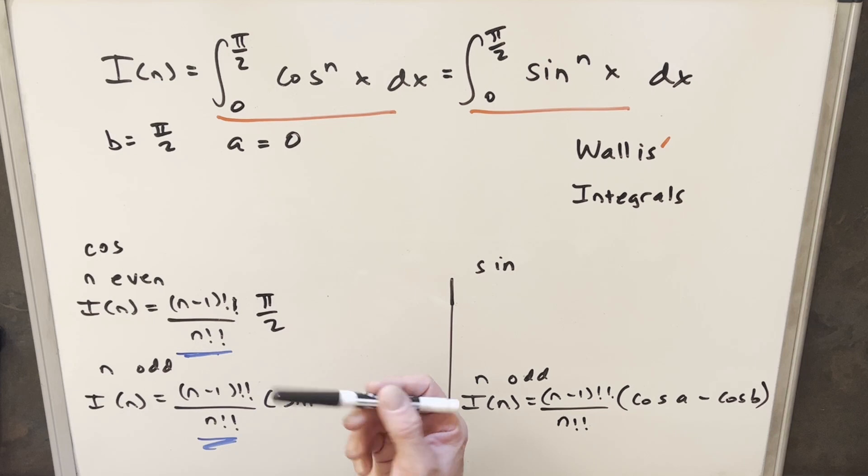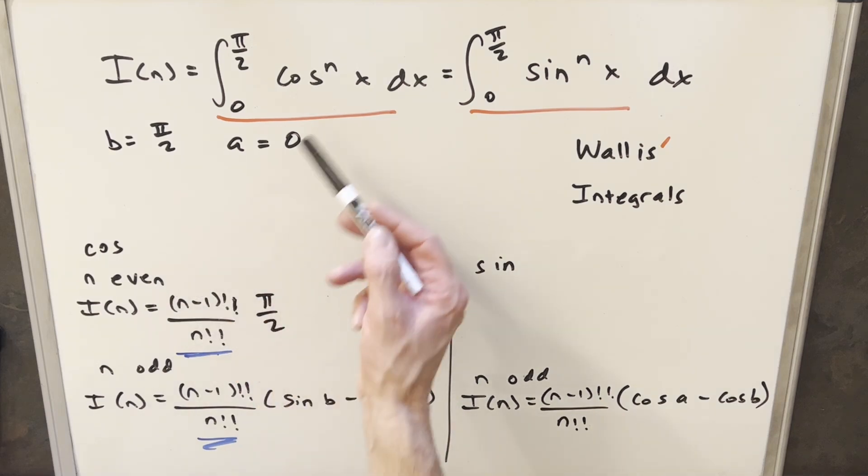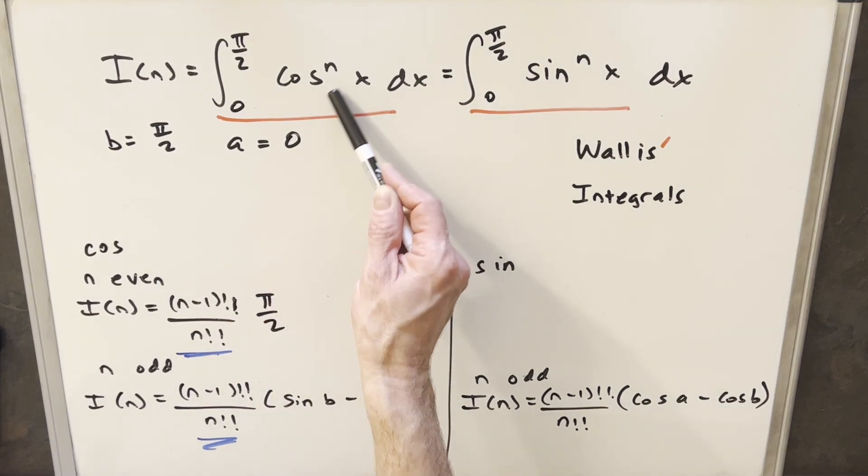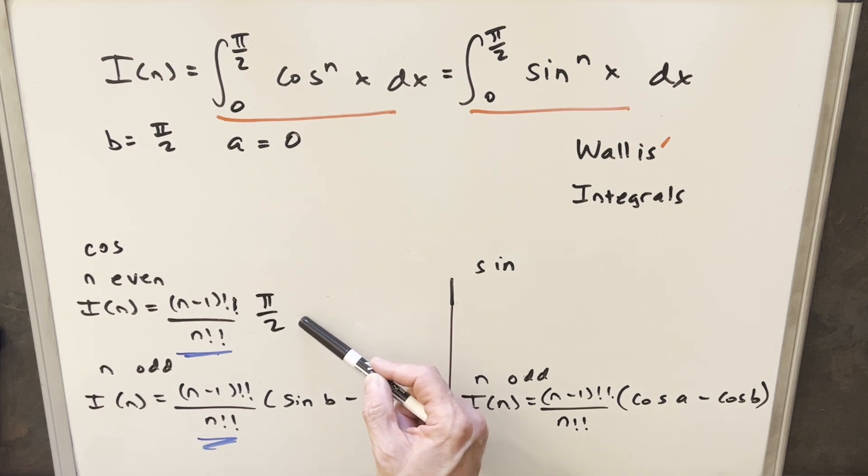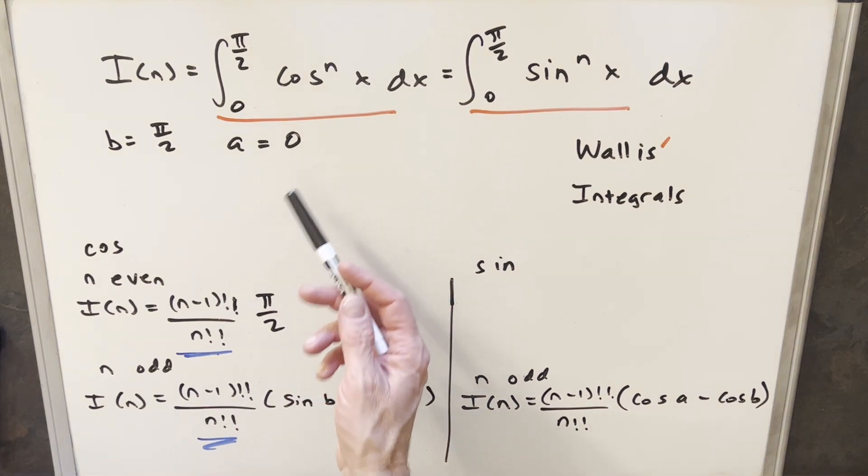We're not going to worry about that. So this formula right here is going to cover us for the even case. When our n is even, cosine or sine, we can just use this formula with a double factorial to calculate our result. At the end of the video, we'll do a couple of quick examples. And then next, we'll look at our odd case.